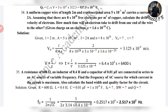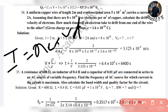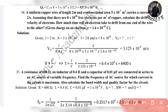Second problem: A uniform copper wire of length 2 m and cross-sectional area 5×10⁻⁷ m² carries a current of 2 A. Assume there are 8×10²⁸ free electrons per metre cube of copper. Calculate the drift velocity.